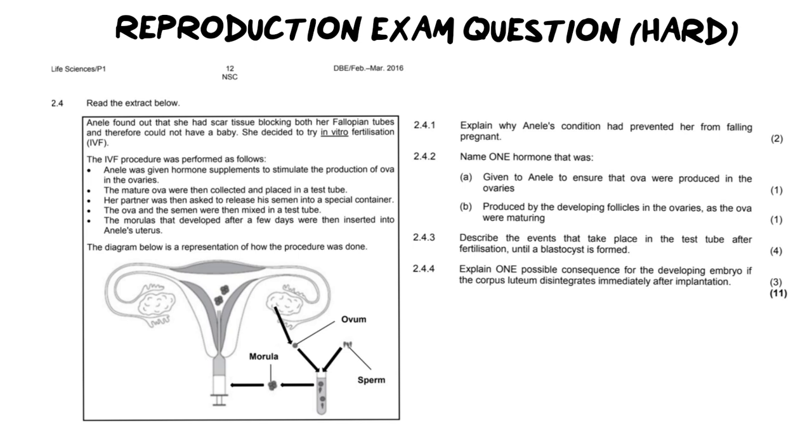So it says Anele found out that she had scar tissue blocking both her fallopian tubes. For those of us who don't know what scar tissue is, it is tissue that has formed due to an injury potentially or an infection and scar tissue doesn't have any major function other than holding tissues together. So it often forms in like a fibrous way. So I want to keep it in the back of your head and it says therefore could not have a baby.